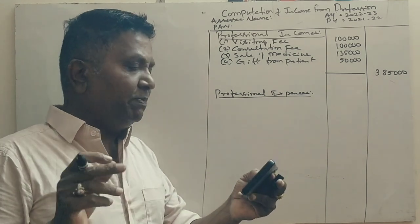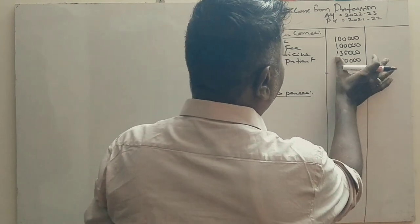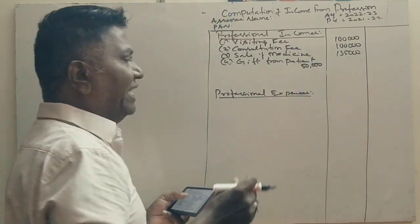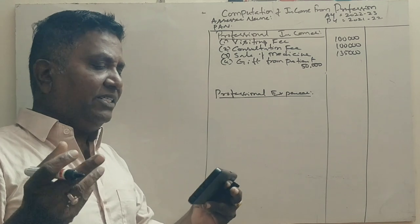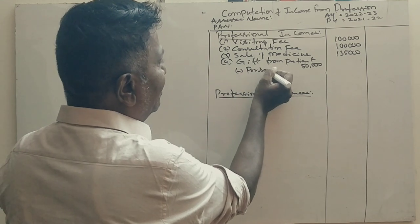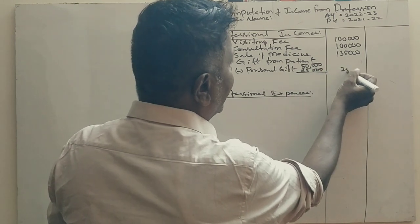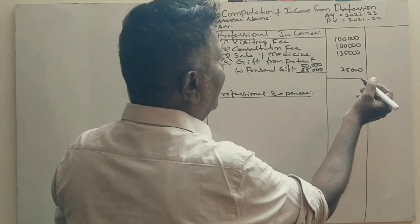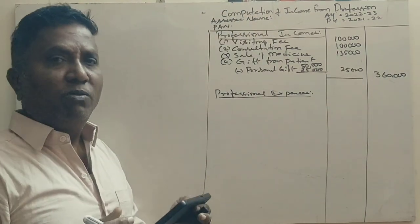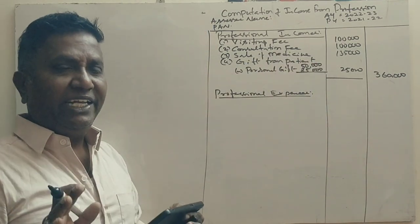Adjustment: the additional information says that the gift includes 25,000 rupees received from a patient on the occasion of his birthday. This is a personal gift received on a birthday, so 25,000 is excluded. Only 3,60,000 rupees — wait, only the professional portion comes here, not the personal birthday gift.